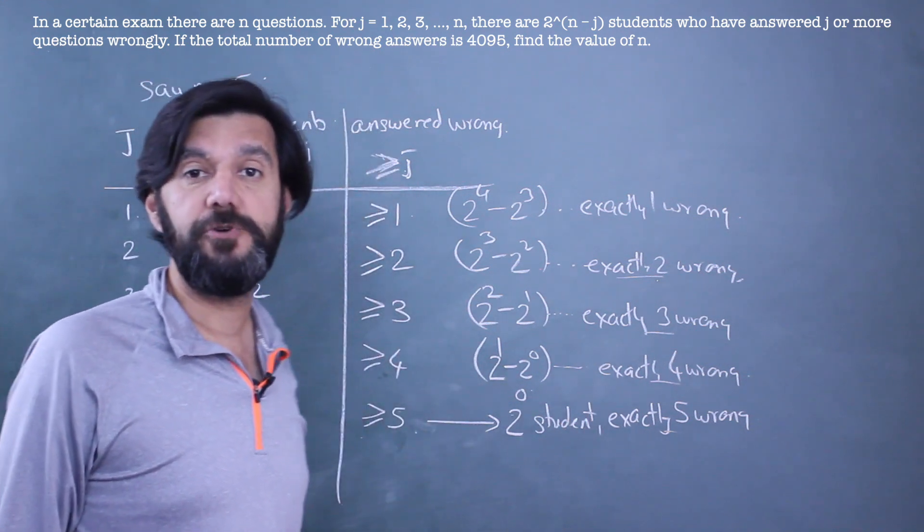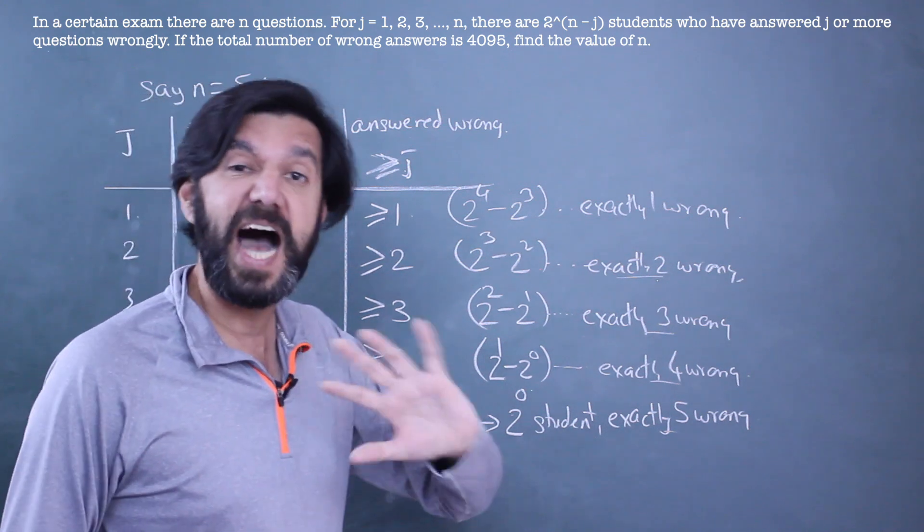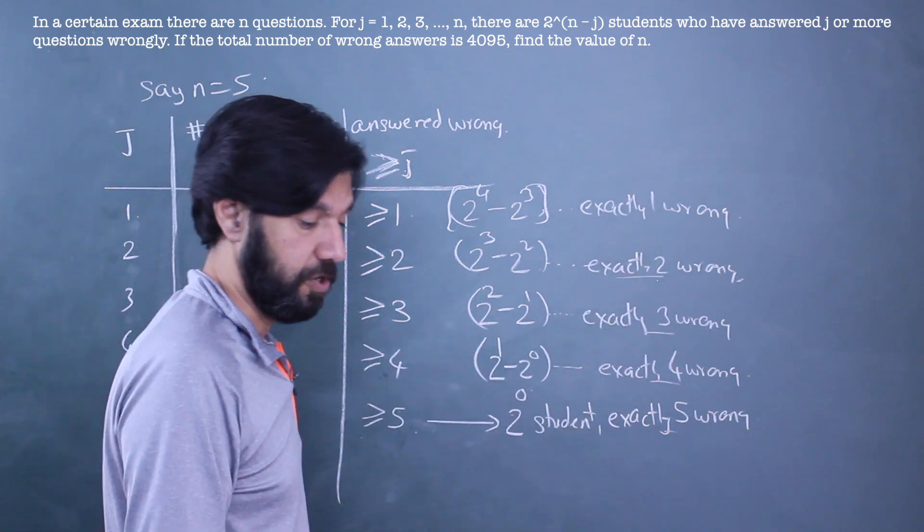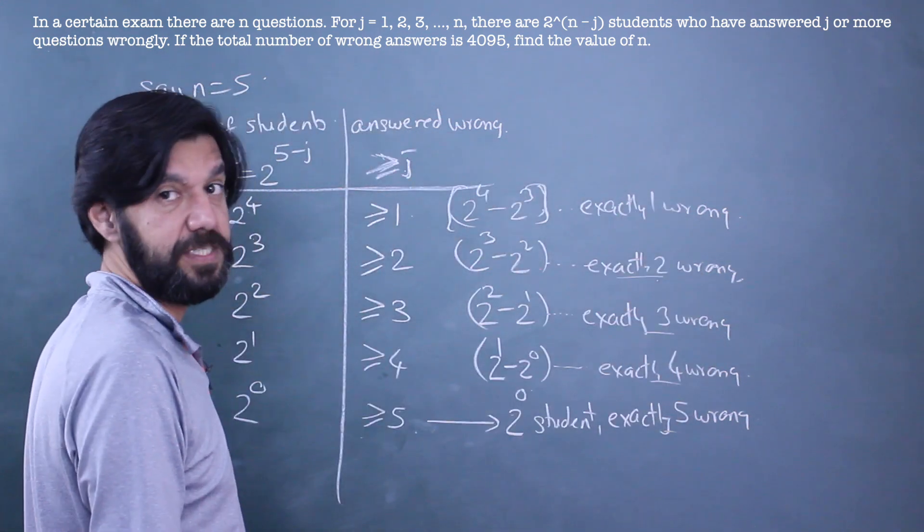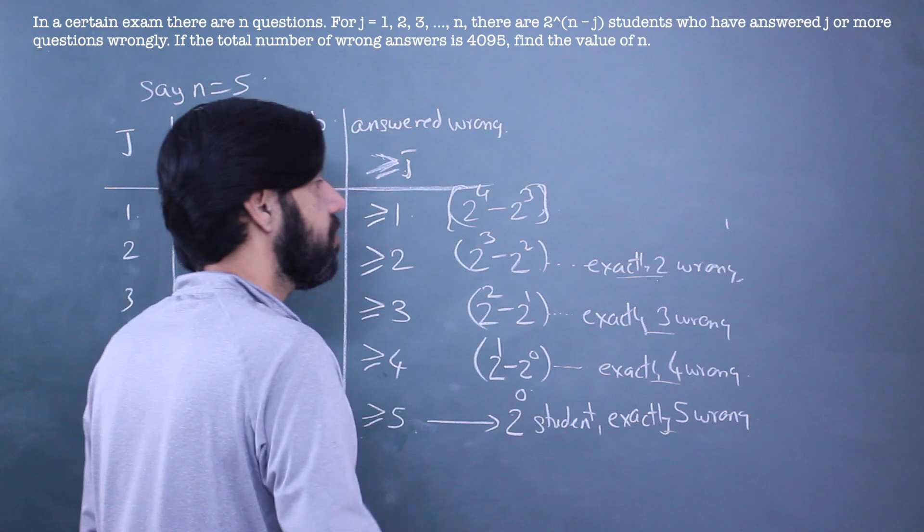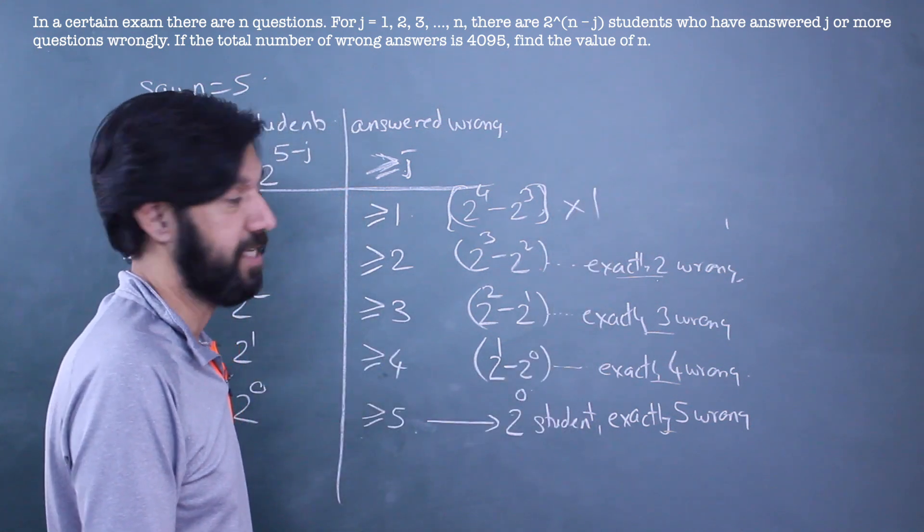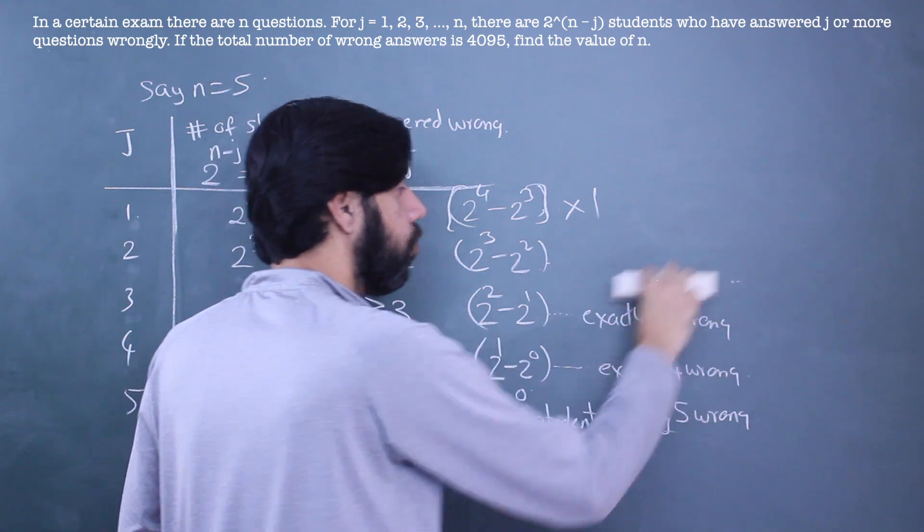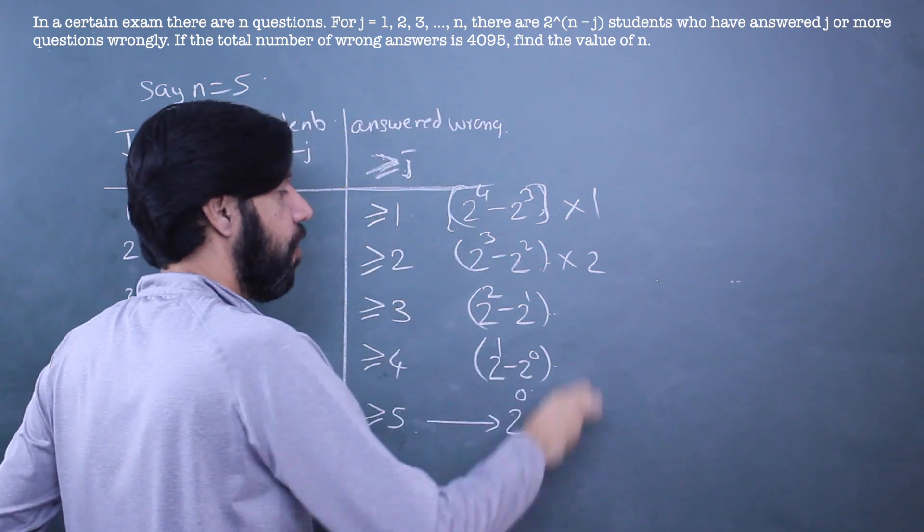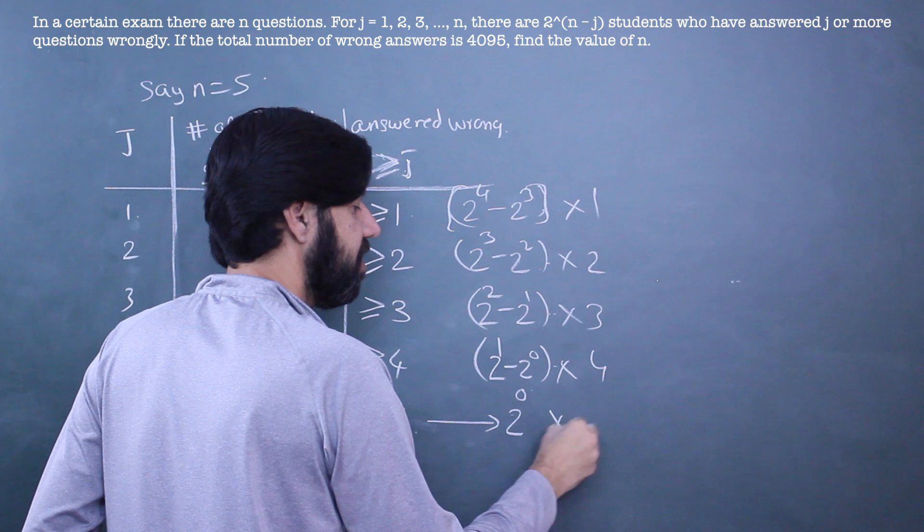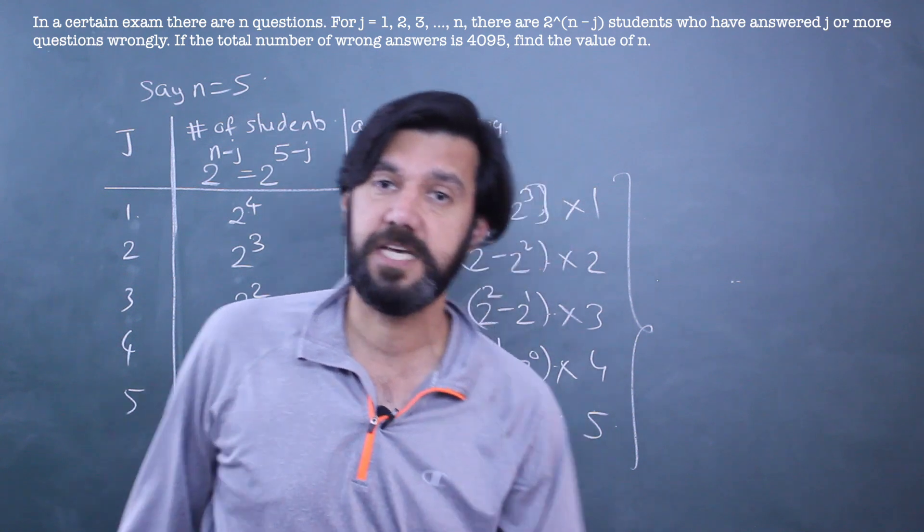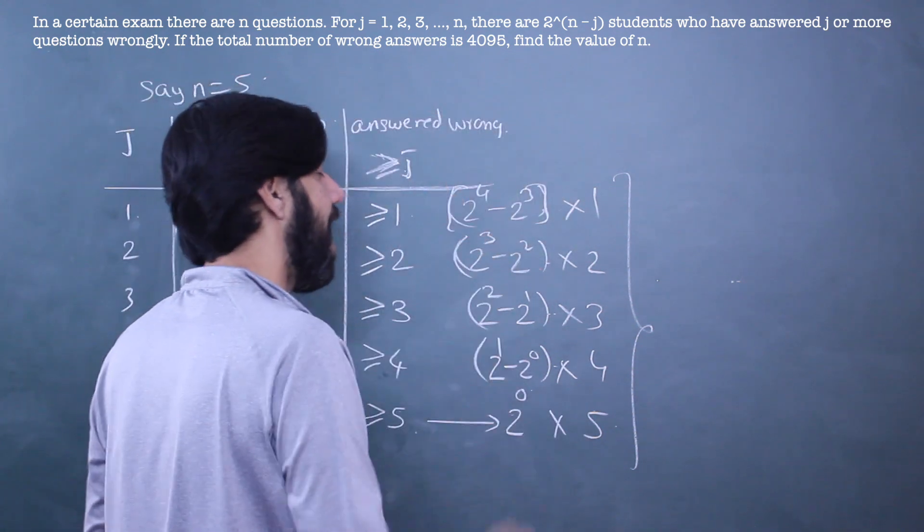And now what is that 4095? 4095 is nothing but the number of wrong answers. How do I find the number of wrong answers? The number of students times the number of wrongs. I'm going to erase this just to save space. These are the number of students who have answered one question wrong, so this many times 1 wrong answers. These are students who have answered 2 wrong, so these many times 2. Similarly these many into 3, these many into 4, these many into 5. And the summation of them, the total number of wrong answers is given to me. So if I add them, now look at what's happening.